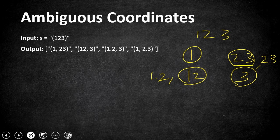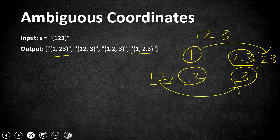The overall combinations of 2D coordinates will be: (1, 23), (1, 2.3), (1.2, 3), and (12, 3). These are the possible combinations we can make from the given input string, and this is going to be our output.